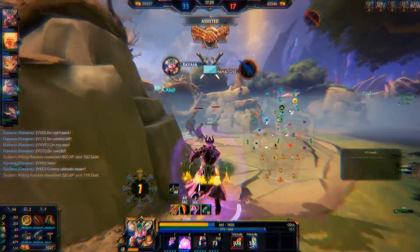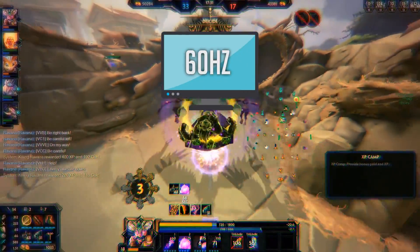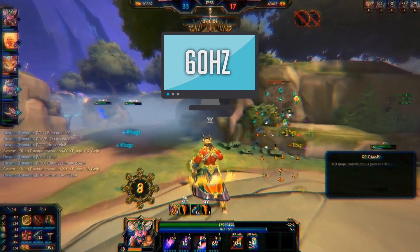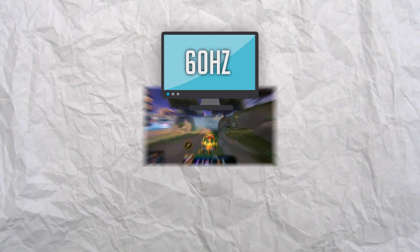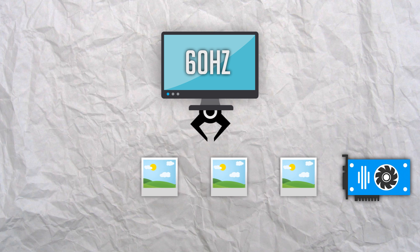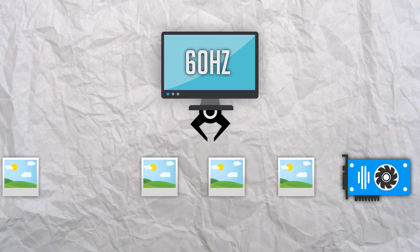So let's say your monitor is 60 hertz — that means your monitor's screen will update itself 60 times a second. Keep in mind I'm keeping things very simple here. Every time your monitor goes to update itself, it will grab the most recent frame coming from your video card.